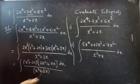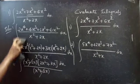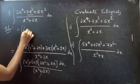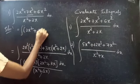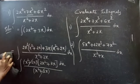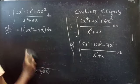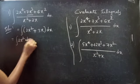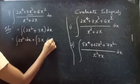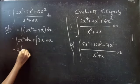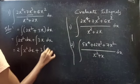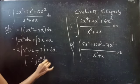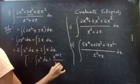Now we can cancel x² + 2x from the numerator and denominator. We get the integral of (2x² + 3x) dx. This is easy to solve. We split it as integral of 2x² dx plus integral of 3x dx, then take constants outside: 2∫x² dx + 3∫x dx.